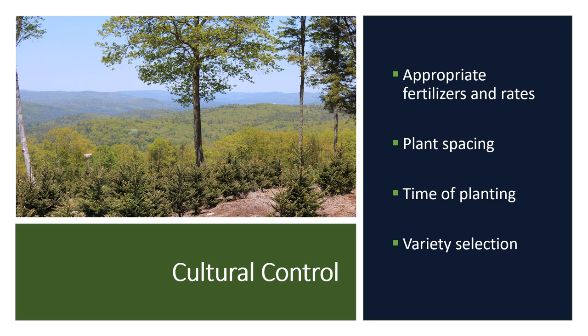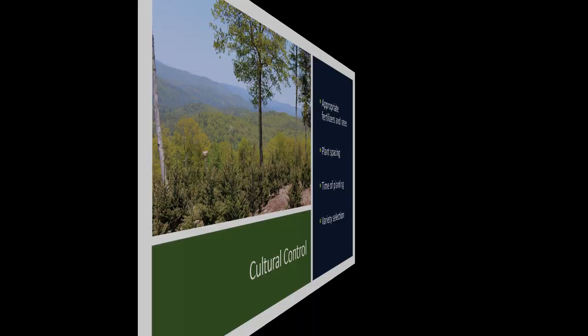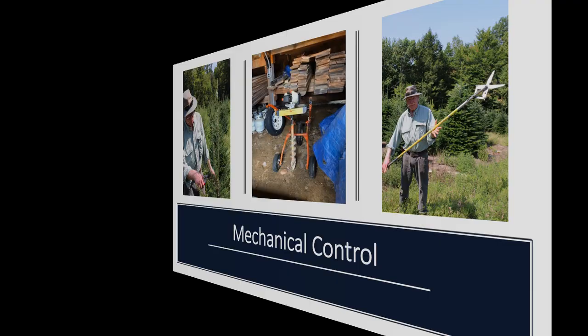Other cultural controls include proper planting spacing within rows and between rows, the time of planting, and the variety or plant selection you make. This is necessary so that you choose varieties that are competitive, providing rapid early season growth, as well as selecting varieties that are resistant to disease and insects.